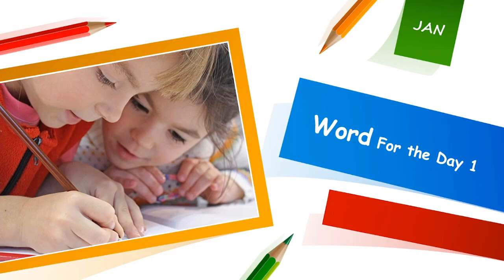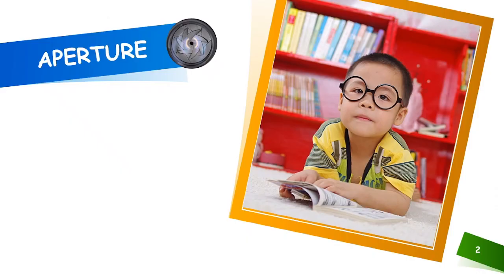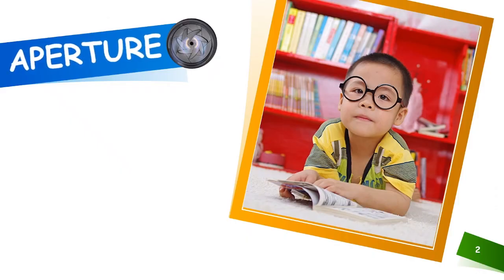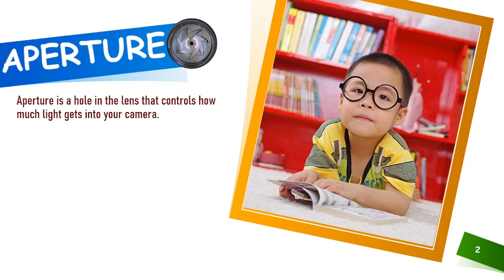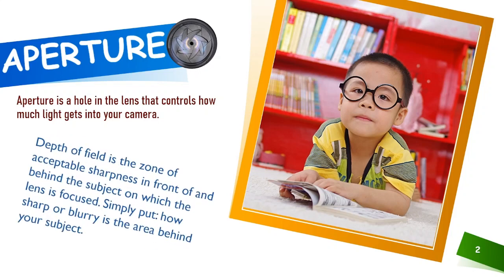Word for the day: one. Spell it and remember. Aperture. What is aperture? Aperture is a hole in the lens that controls how much light gets into your camera.